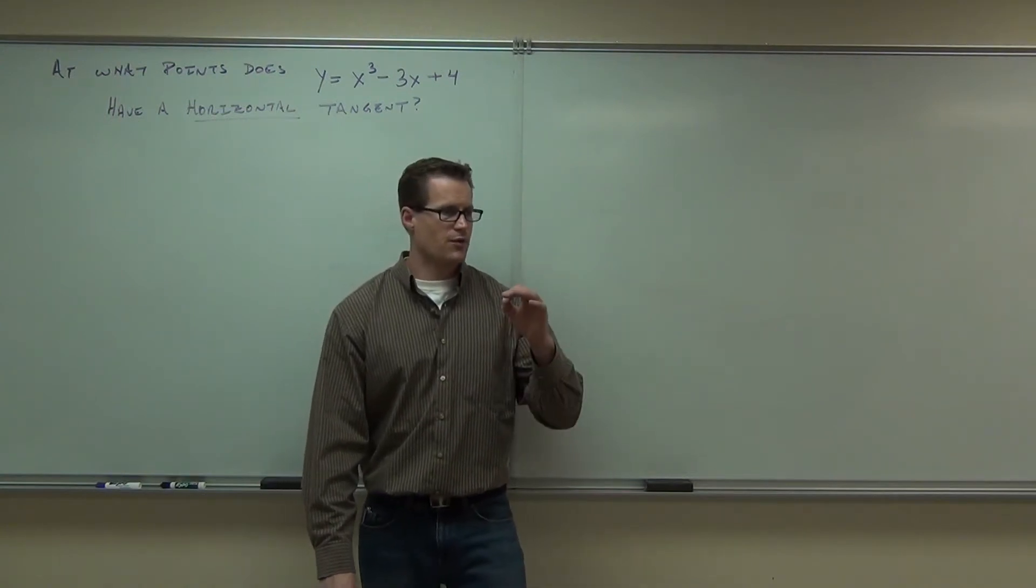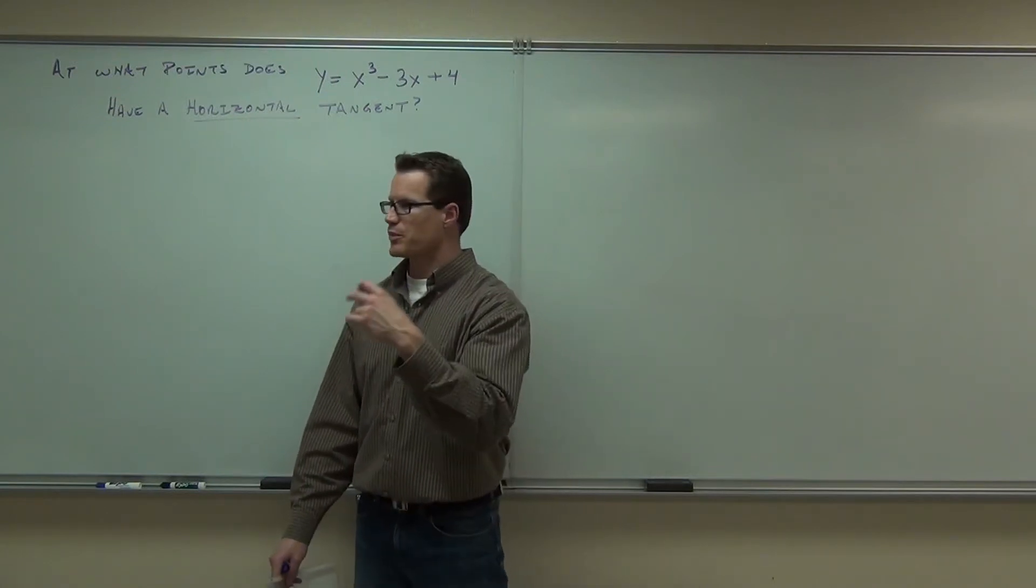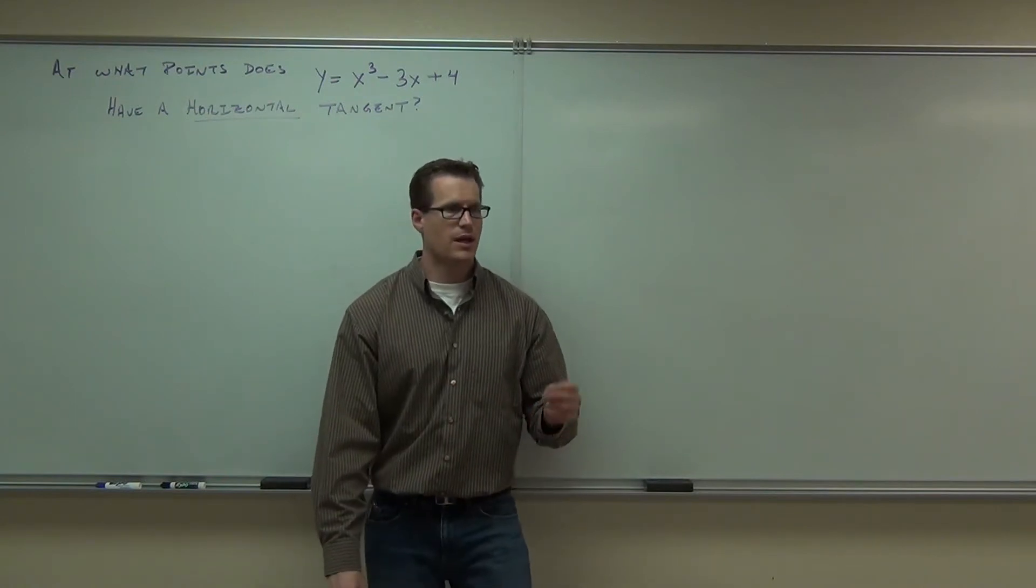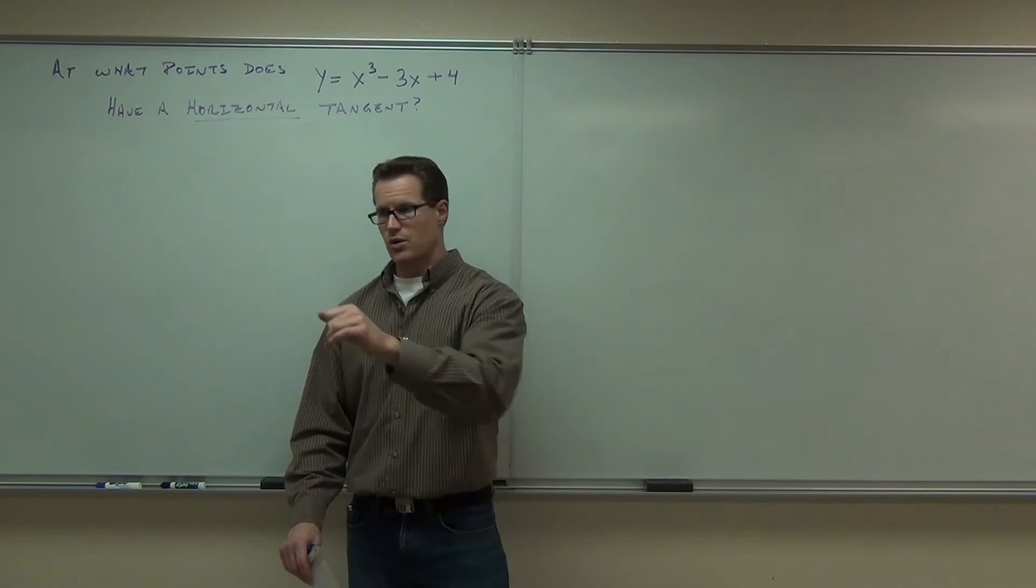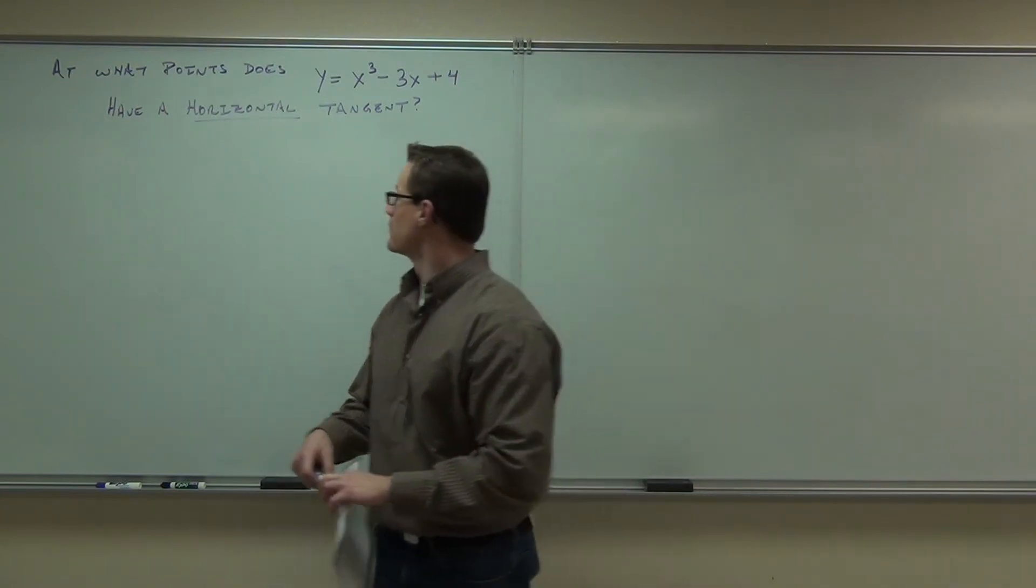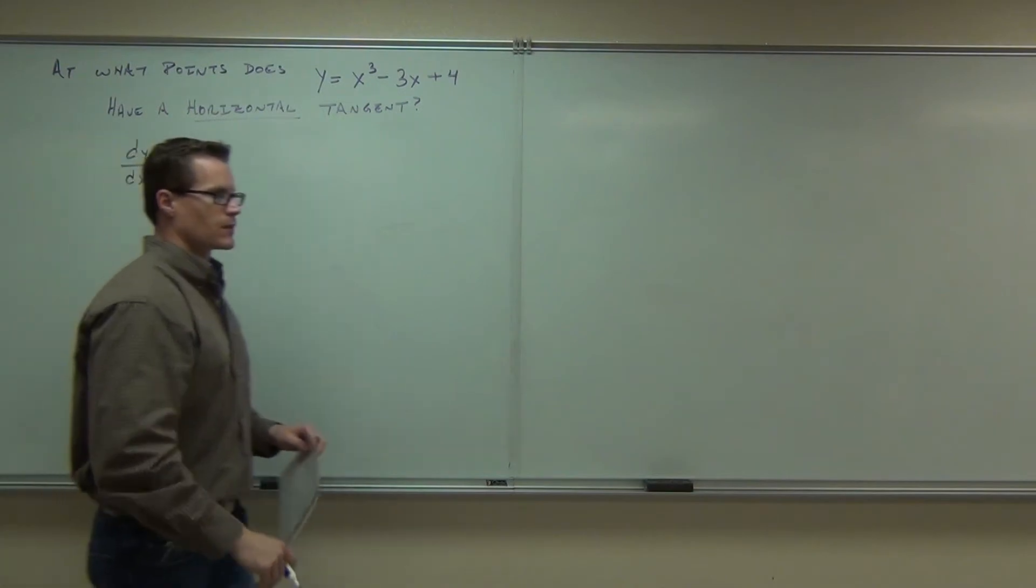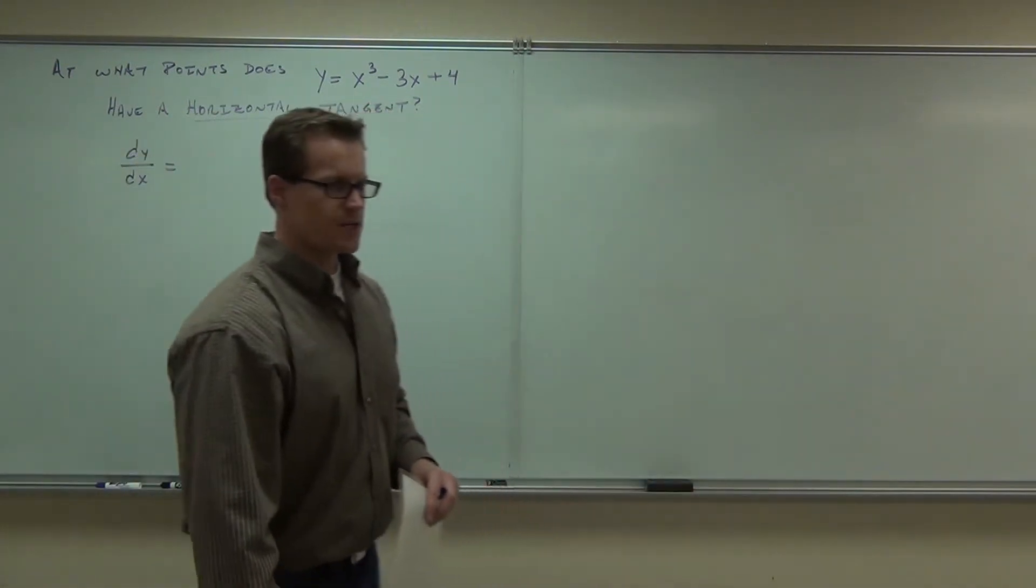So if we found the derivative of our original function and we found out where that was equal to a slope of zero, then we're going to be able to find the points where we have a horizontal tangent line. Here's how you would do that. Number one, take your derivative of your function. Go ahead and do that now. So do dy/dx or y prime if you'd like.